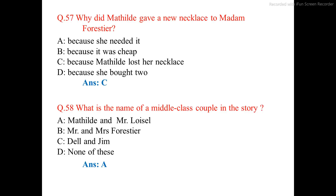Question number 57. Why did Mathilde give a new necklace to Madam Faustier? The correct option is option C: because Mathilde lost her necklace.